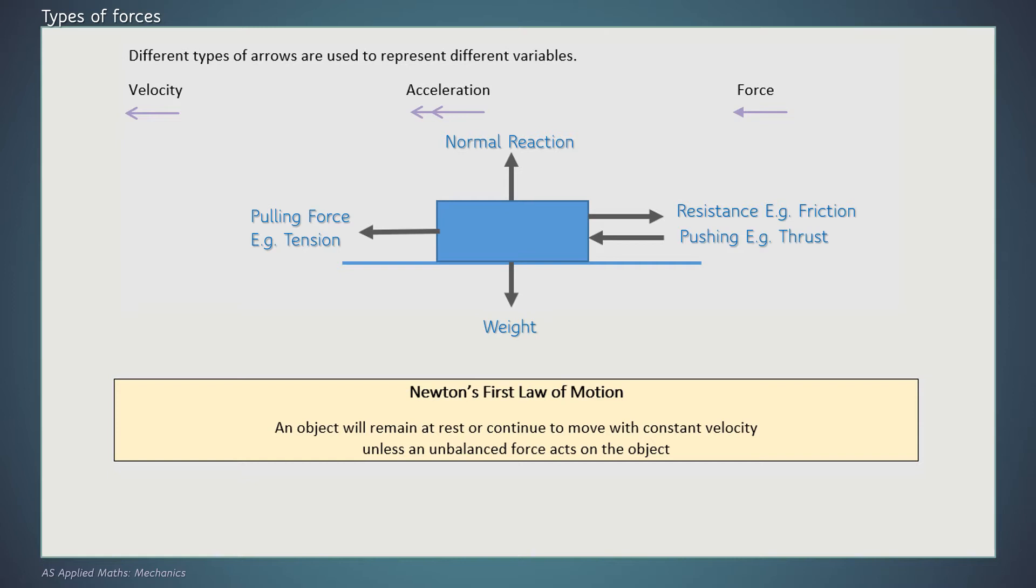So if we're looking at the different forces we've got here, pulling forces and pushing forces are doing the same thing. They're going in the same direction, but in the question they'll be presented differently. An example of a pulling force is something like tension. That's going to come from a piece of string. A thrust is very similar, but it will come from having some sort of rigid rod, something that's solid.